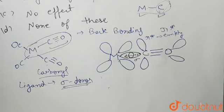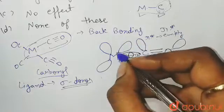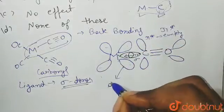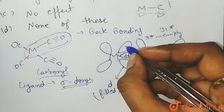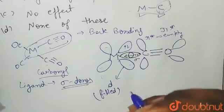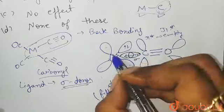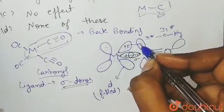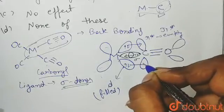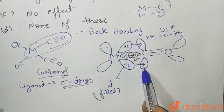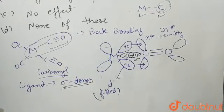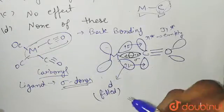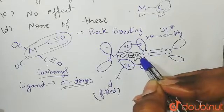These pi star orbitals of the carbonyl are empty. The d orbitals of the metal, however, are filled. So what happens is the electrons from the filled d orbitals of the metal are donated into the pi star of the carbonyl — both lobes of which are the pi star orbitals of C triple bond O.